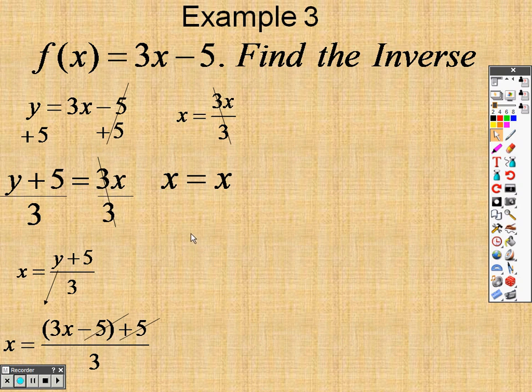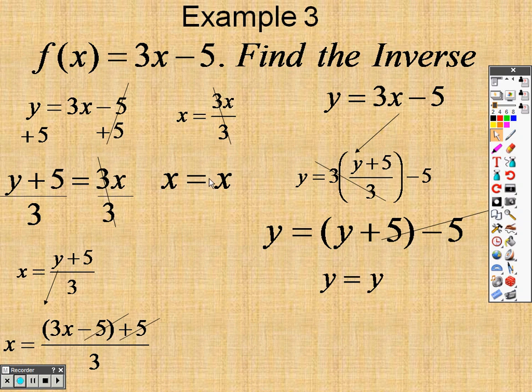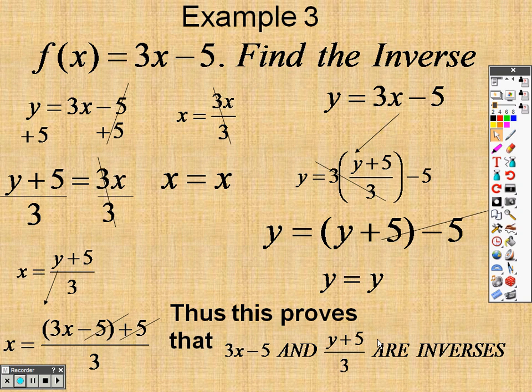But just because x equals x, I have to make sure y also equals y. So when I'm doing this, I'm now going to start with this, but I'm going to plug this whole item in for x. So instead of that x being there, I'm going to plug in the y plus 5 over 3. And what I realize is the 3s cancel out, so I get y plus 5 minus 5, and plus 5 minus 5 cancels out. So I get y equals y. So since x equals x and y equals y, this proves that these two items are truly inverses of each other.